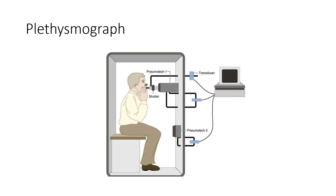This is the most accurate method for assessing residual volume, functional residual capacity, and total lung capacity, because we have a known volume in the chamber. We have a known volume for what the patient is breathing out, so we can get a very accurate measure of what volume remains in the lungs after a normal breath — the functional residual capacity — as well as the residual volume when they completely breathe out.